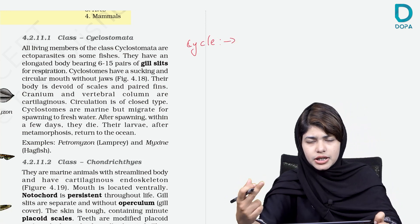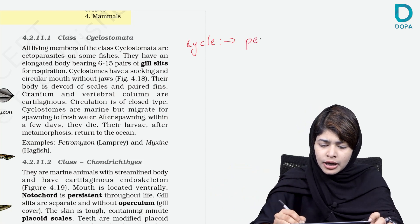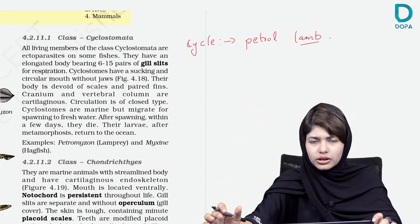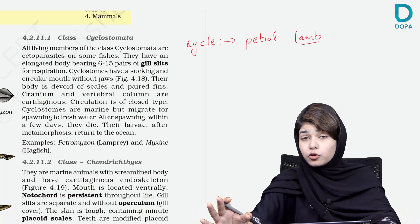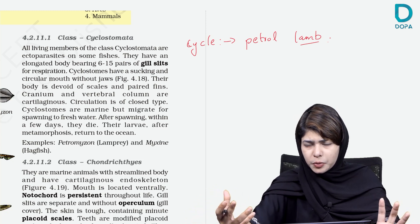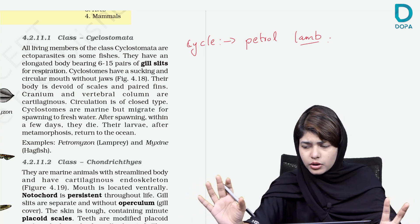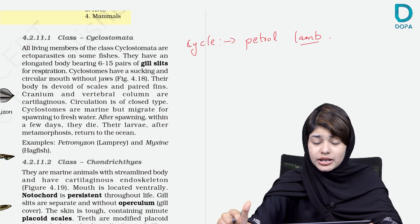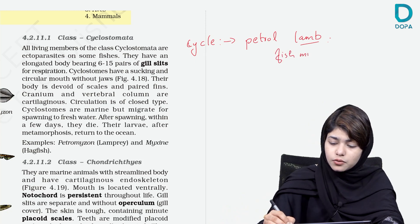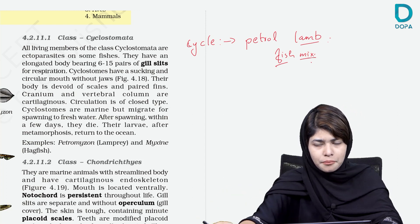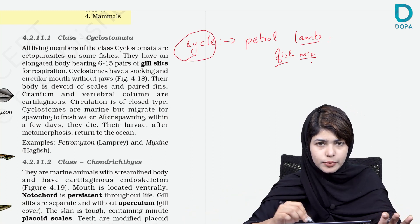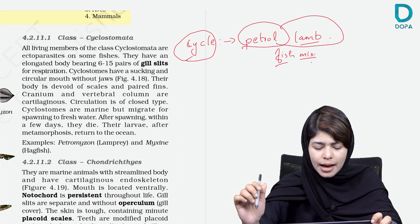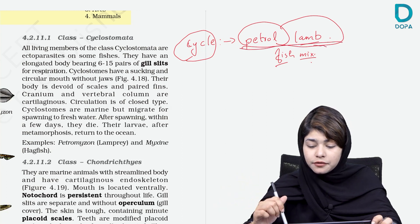Cyclostomata — cycle, petrol, pectoral. Like a lamp, and if you saw a lamp, you can find a lamprey. Mix with fish. Cyclostomata has petromyzon — lamprey and petromyzon. You can see a lamprey, you can see a petromyzon — it is a fish with a mix.